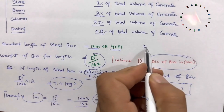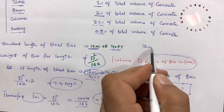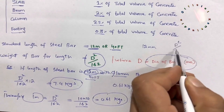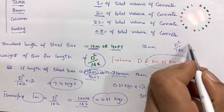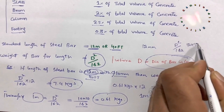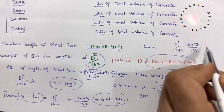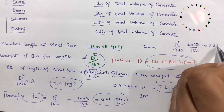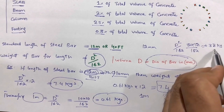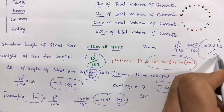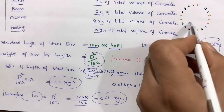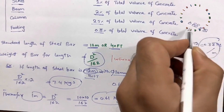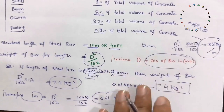If the diameter is 12 millimeters, you use the same formula: d² ÷ 162 = 12 × 12 ÷ 162 = 0.88 kg per meter. For a 12-meter length: 0.88 kg × 12 = 10.56 kg total for one full length.